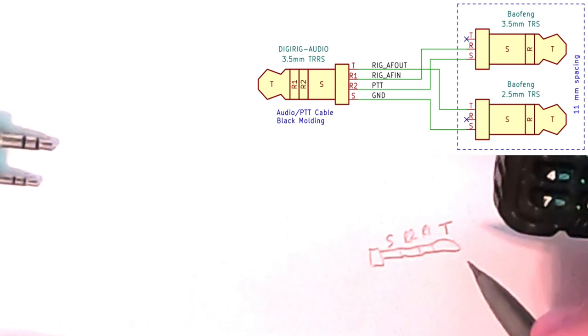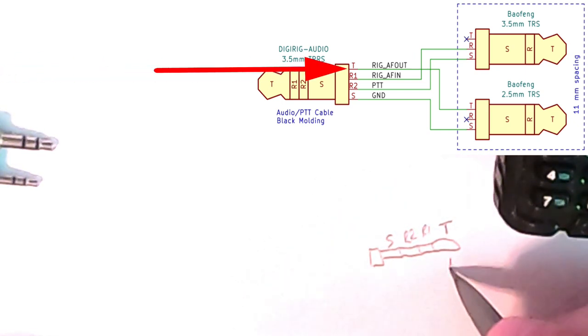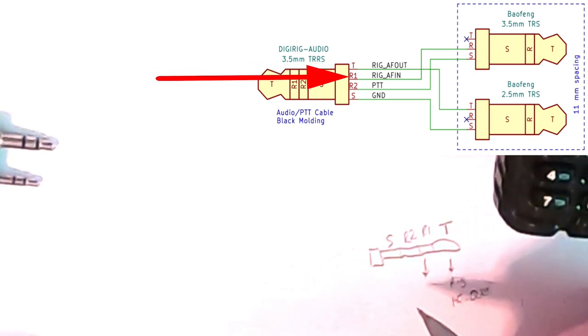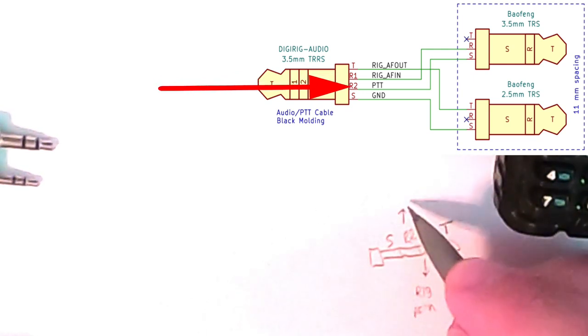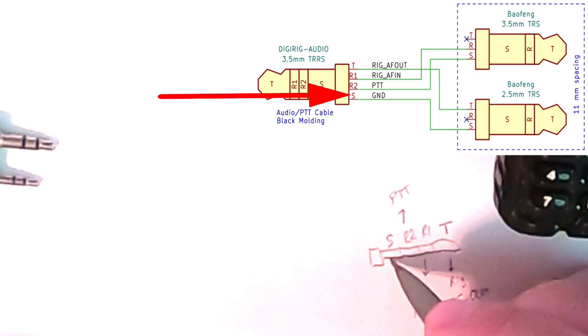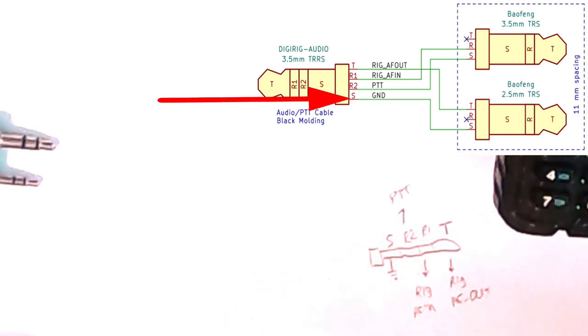And what this turns out to is this is rig AF out, according to the Digirig wiring diagram. R1 is going to be rig AF in. R2 is PTT, and we know that this is ground. The sleeve is usually ground.